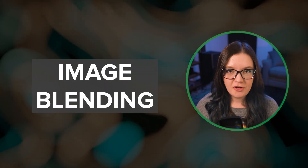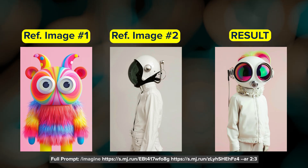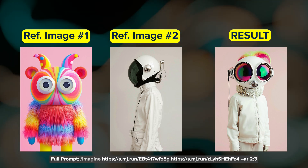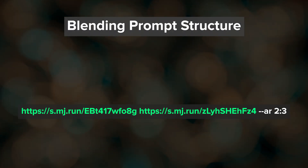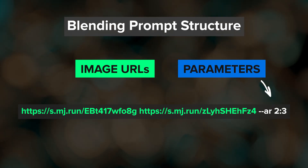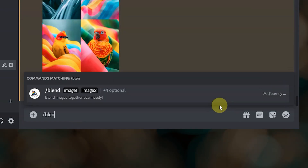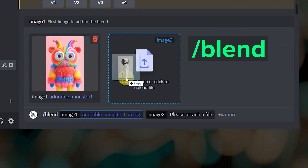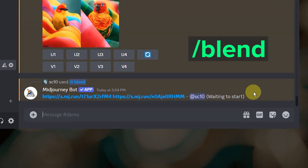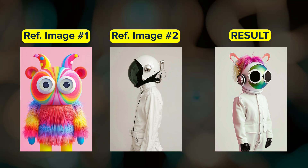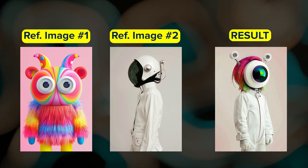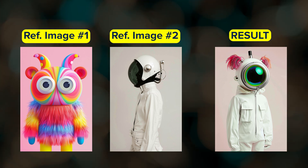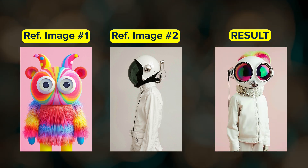The second way to use images in your MidJourney prompts is with blending. Technically, this is the same as the standard image prompt but without the use of a text prompt. To blend images in MidJourney, paste your image URLs, add your parameters, and press enter. In Discord, you also have the option to use the slash blend command to quickly add 2–5 external images to your prompt. MidJourney will look at the content and style of each image and then create new images. By default, MidJourney gives equal weight to each image in your blend, meaning they will have an equal influence on the results.